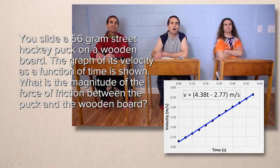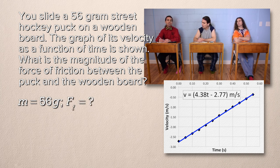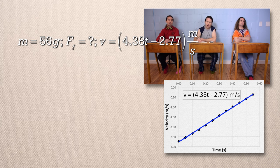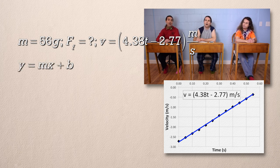What do we know from the problem? We know the mass of the puck is 56 grams. We're looking for the force of friction, so that equals question mark. And we have the equation for the velocity as a function of time: velocity equals 4.38 times time minus 2.77 in meters per second. That's the slope-intercept form of an equation for a line, or y equals mx plus b. So 4.38 is the slope and negative 2.77 is the y-intercept.